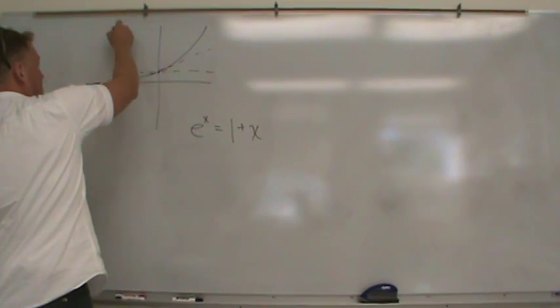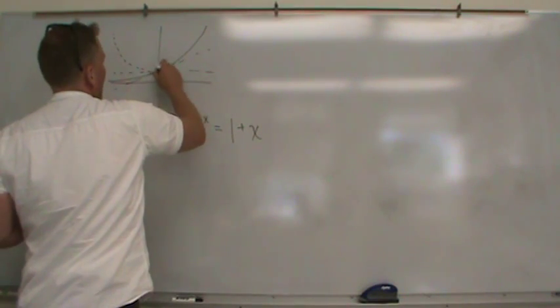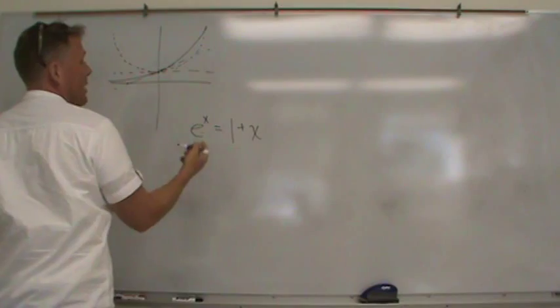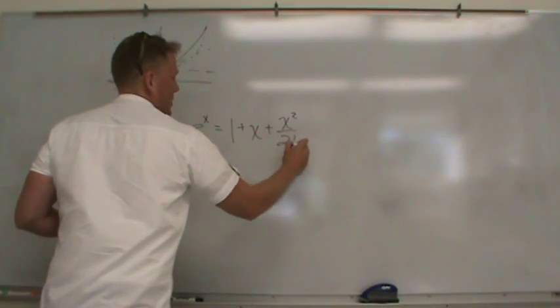And then as you go to higher order terms, our next term is an x squared term, and that works even for, that's a better fit. It's actually an x squared over 2 factorial, as it turns out.